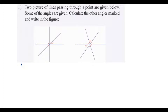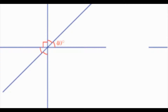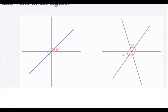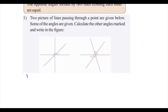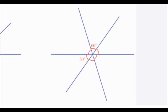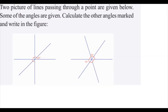This is the video for this chapter. Here are two pictures of lines passing through a point. Some of the angles are given. Calculate the angle, mark the angle, and write the figures. In this portion, the angle is 40 degrees. By using these values, we have to find the other angles.